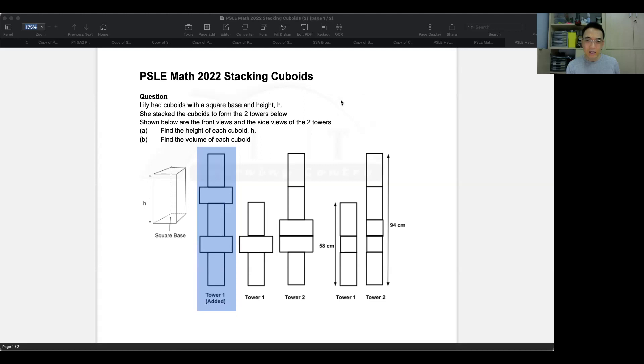So let's now first look at the keywords to this question. The keywords are Lily had cuboids with a square base and a height h. So you can see this is square base and this is the height. Now the height over here is actually the same as if I were to draw a line here and put an h. So this is all for understanding.